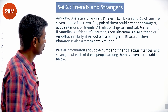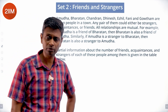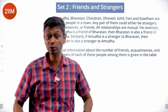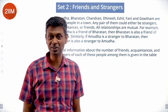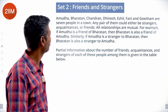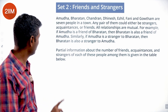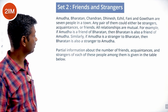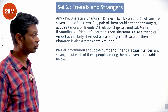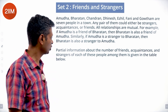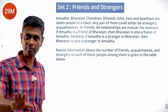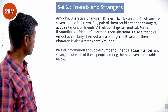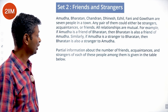All relationships are mutual, so if A and B are friends, B is also A's friend. We don't have an issue where I think I'm his friend but he doesn't think that way. For example, if Amudha is a friend of Bharatan, then Bharatan is also a friend of Amudha. Similarly, if Amudha is a stranger to Bharatan, then Bharatan is also a stranger to Amudha — so there's no ghosting happening here.